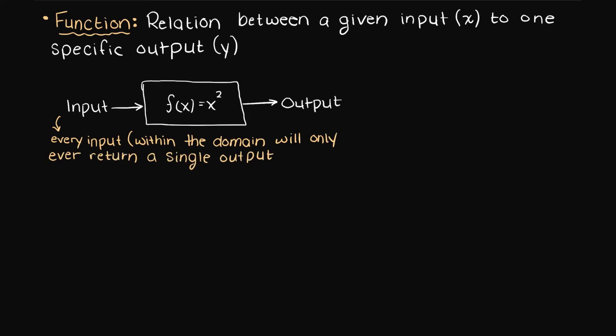This creates what we call an ordered pair, which means that every x value, which remember is our input, has only one possible output of the function, and this will never change.